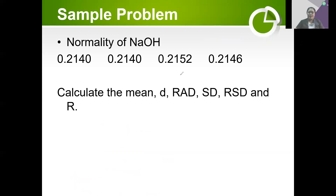Now let's move on to the standard deviation, which is the most commonly used measure of variation and the most accurate among them to show whether our set of data is precise or not.